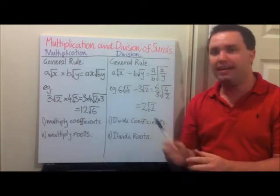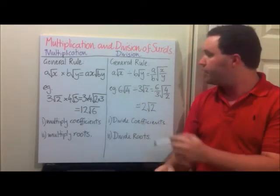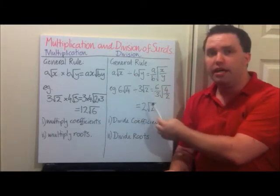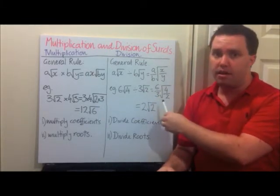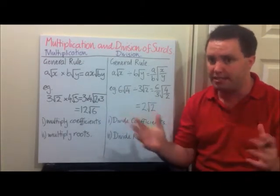For division, our general rule here is: a√x divided by b√y, we're going to end up with (a/b) times the square root of (x/y). This is very similar to the multiplication, but we're dividing instead.